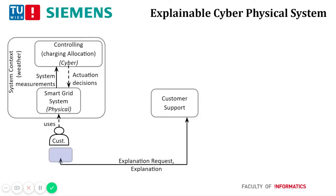A CPS is all around us, and the smart grid is one example. A CPS bridges the physical and cyberspace. The physical space covers the physical components — sensors and actuators — while in smart grids this refers to grid equipment, network topology, sensors collecting system measurements, and actuators carrying out commands. At the cyber level, measurements are collected, processed, and fed into optimization and control algorithms, which derive actuation decisions to be executed in the physical space.